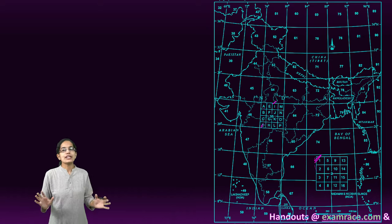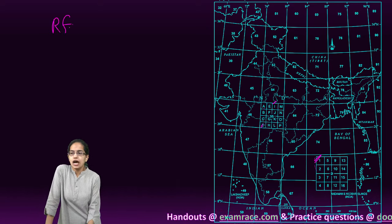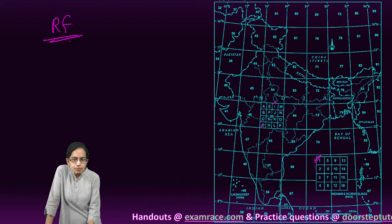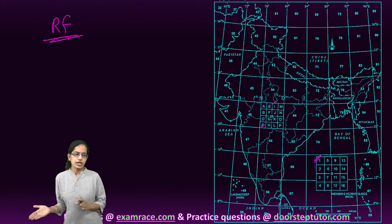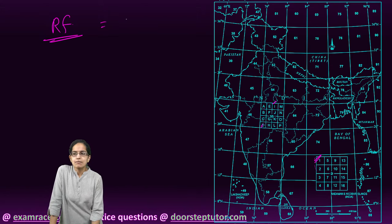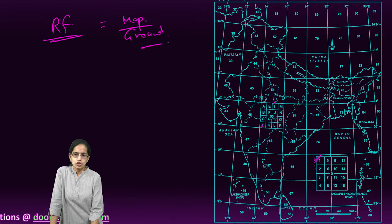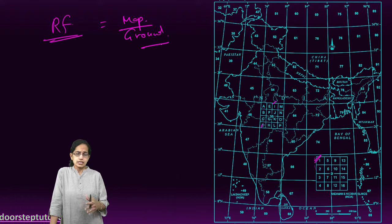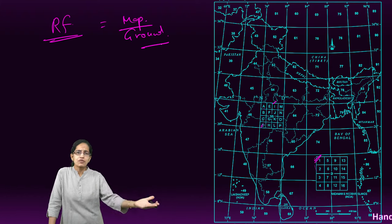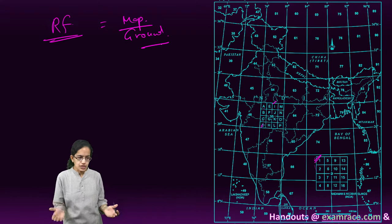Some important terms we must be familiar with. First is the RF — the representative fraction — which we have already covered. It is the ratio of map distance to actual ground distance; for example, 1 is to 50,000 is a translation of the scale.